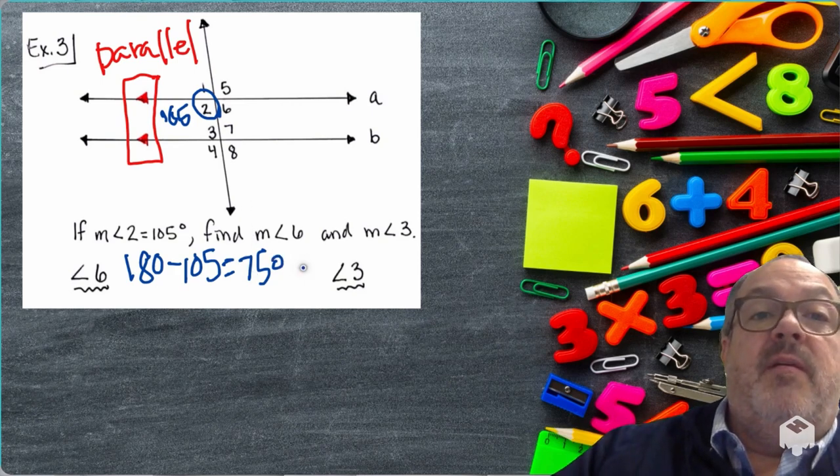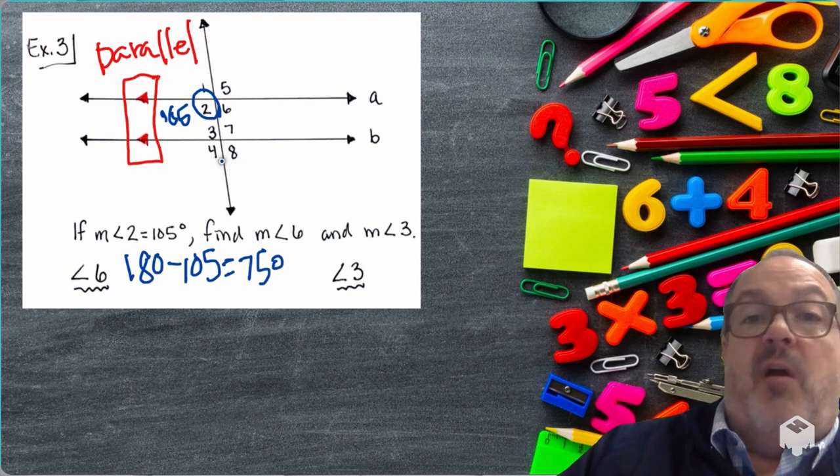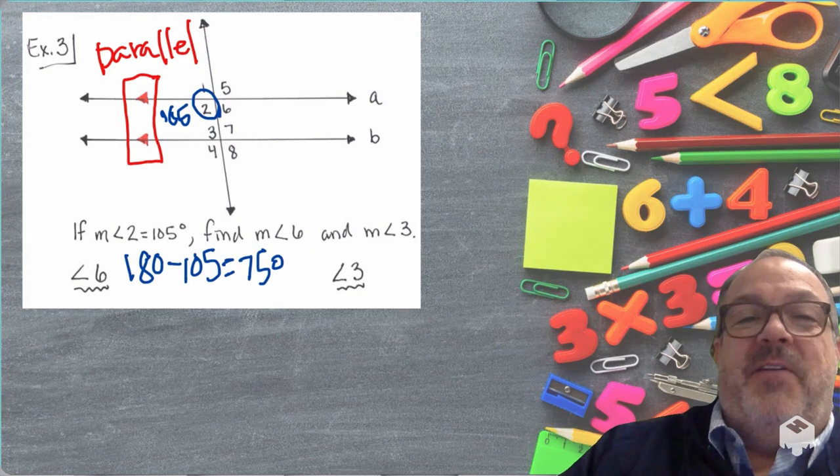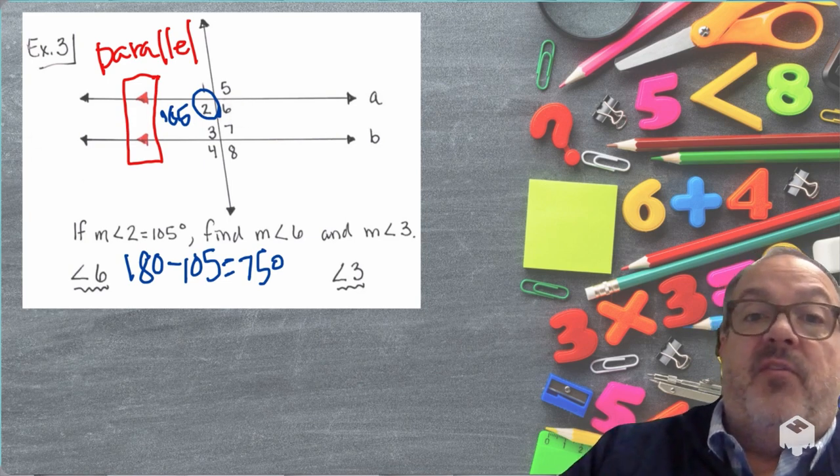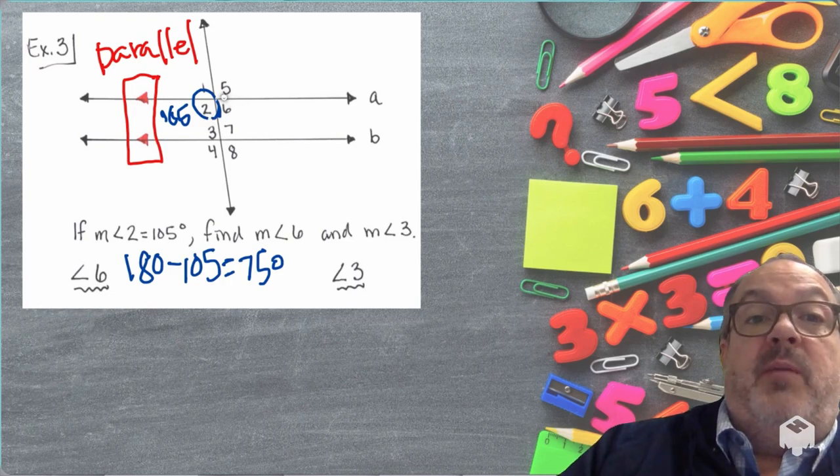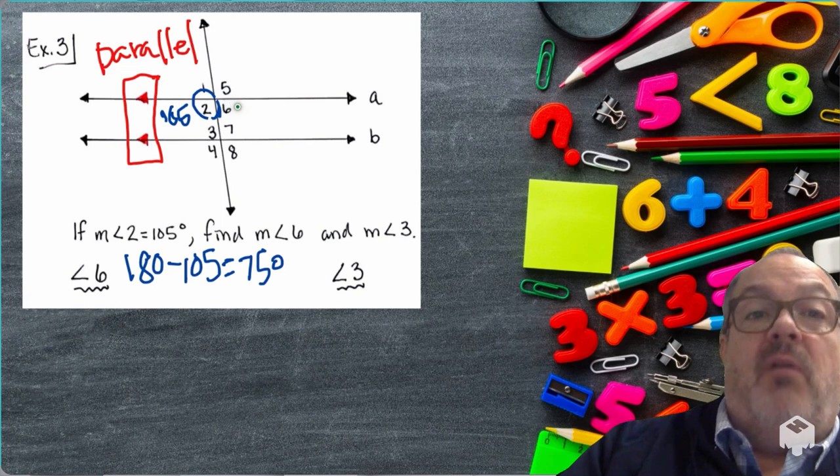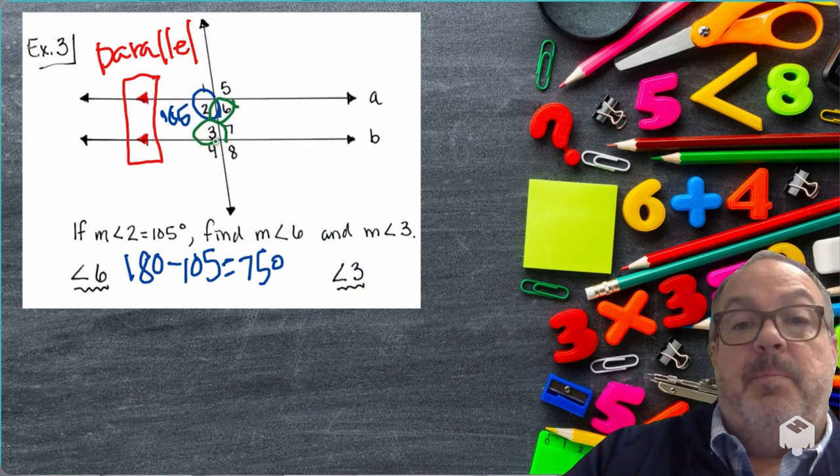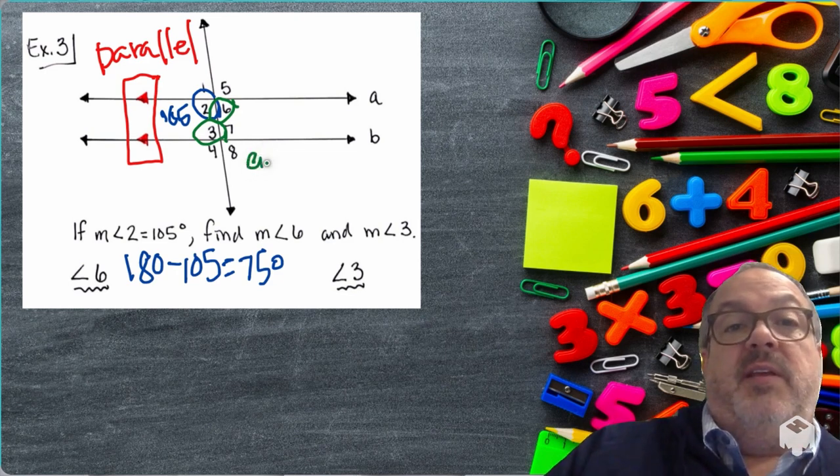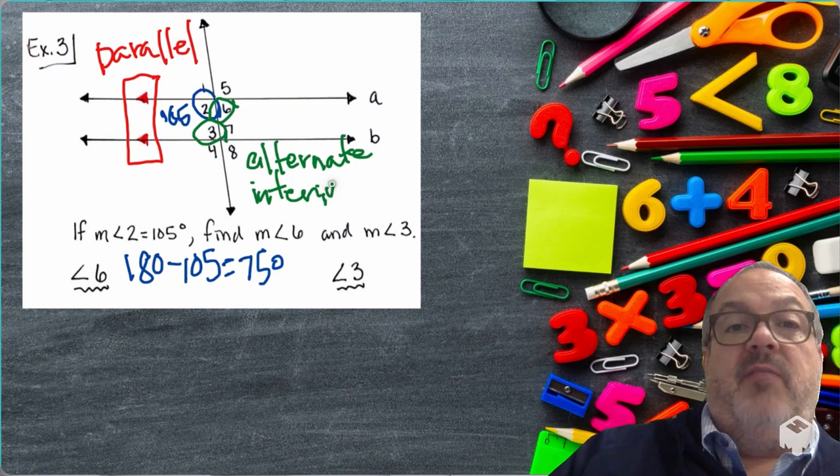Okay. Now, Angle 3 and Angle 6, we can compare those two. Those are Alternate Interior Angles. And Alternate Interior Angles are going to be the same measurement if the transversal that's cutting through the two lines, those two lines are parallel. So since we do have A and B being parallel, and we know that Angle 6 is 75 degrees, that means that Angle 3 will also be 75 degrees. Alternate Interior Angles will be congruent if the lines are parallel.